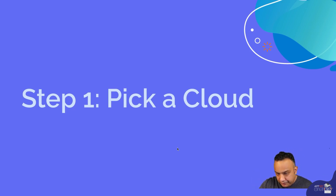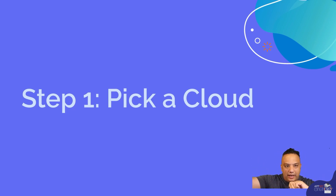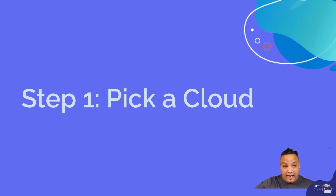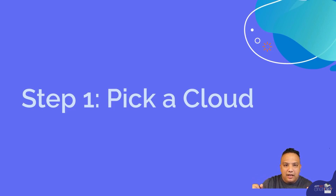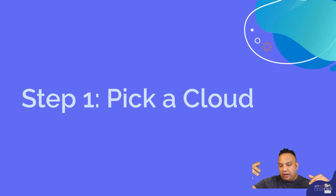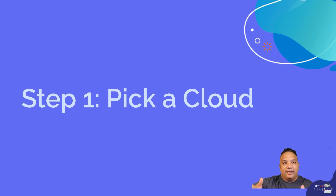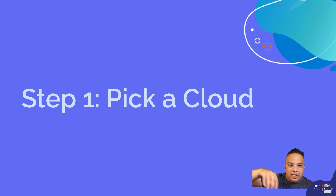Step one: pick a cloud. A lot of people want to get good at multiple clouds — AWS, Azure, GCP, whatever. That's great, and I happen to have competence in multiple clouds. But remember that by trying to learn everything, you end up learning nothing. So pick one cloud, get great at it, and then start to apply the same knowledge in other places.